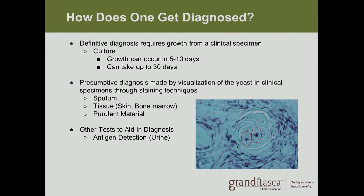There are several different mechanisms for a presumptive diagnosis. You can visualize the mold on a slide through sputum culture. You can do biopsies of skin, bone, or bone marrow. Or you can obtain material through sputum coughed up, or by expressing pus from a skin lesion. Additionally, urine can be used to diagnose the disease — your body produces antibodies to the fungus, and antigen detection in urine can show whether you have been exposed to blastomycosis.